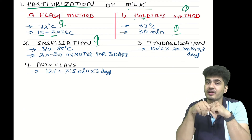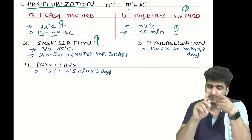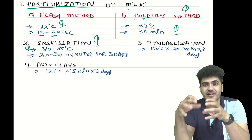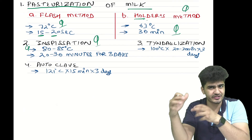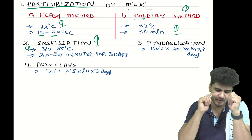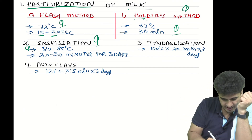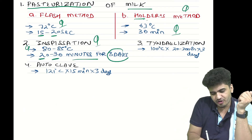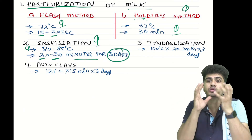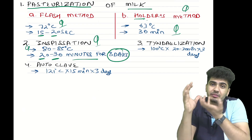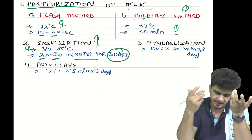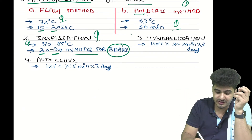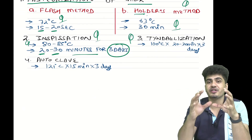Next comes inspissation. Remember, it is also less than 100°C. The temperature is 80 to 85 degrees Celsius and the timing is 20 to 30 minutes, repeated for three days — 20 to 30 minutes for three days.